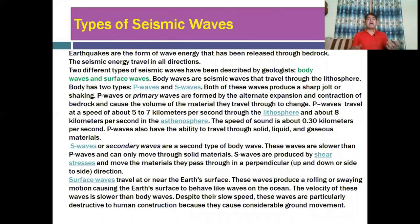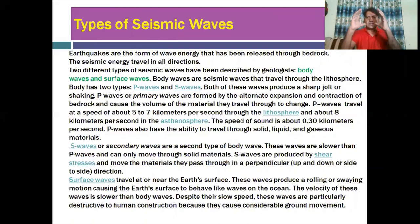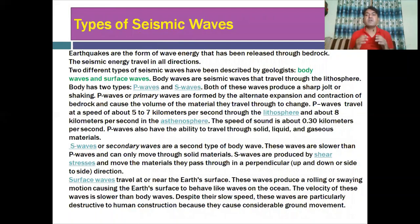Now we are coming to the types of seismic waves. Earthquakes are a form of wave energy that has been released through bedrock, and seismic energy travels in all directions. Geologists have described two different types of seismic waves: body waves and surface waves. Surface waves occur at or near the surface of the Earth, while body waves travel deep inside or below the surface of the Earth.